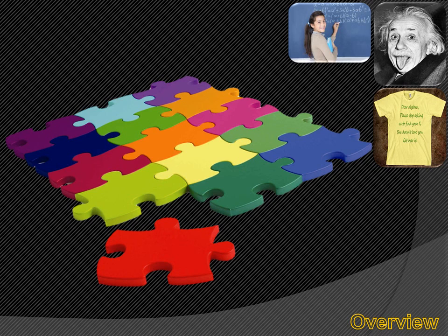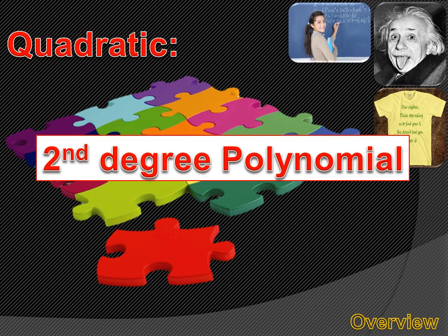We call this factoring quadratics. We could have called this lesson factoring polynomials, because a quadratic is just a type of polynomial. A quadratic is a polynomial of the second degree. For instance, x squared plus ax plus b is a quadratic, because the highest power of any of the variables is 2. So a quadratic is a second degree polynomial.